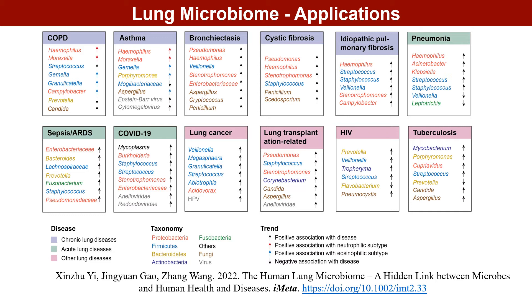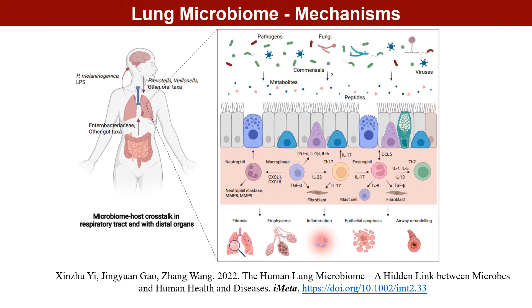For complex diseases like COPD and asthma, the association between microbes and specific disease phenotypes and endotypes is also discussed. The lung microbiome may contribute to disease progression or alleviation by regulating host immunity and inflammation. A few studies established animal models to examine the roles of lung pathogens and commensals in diseases, and identified metabolites they produce which may have an impact on disease.